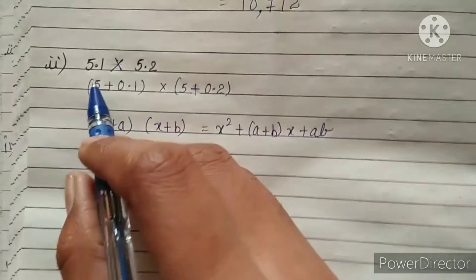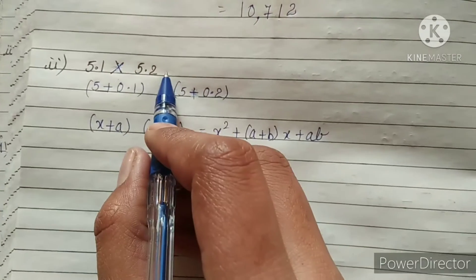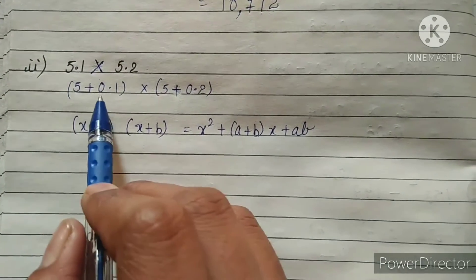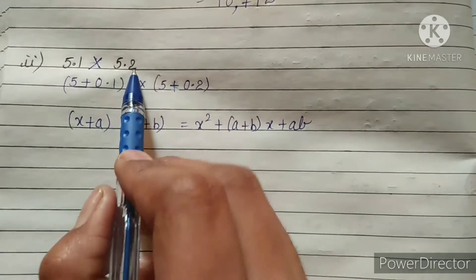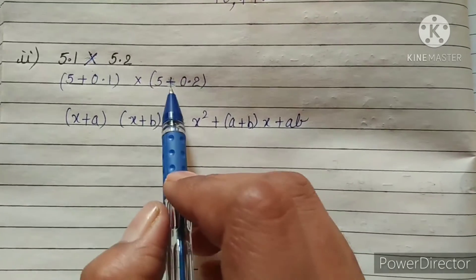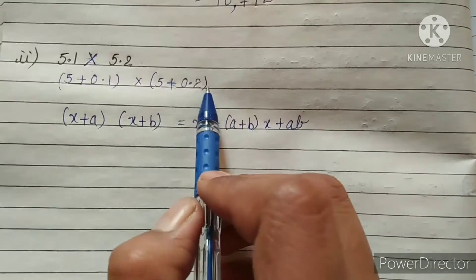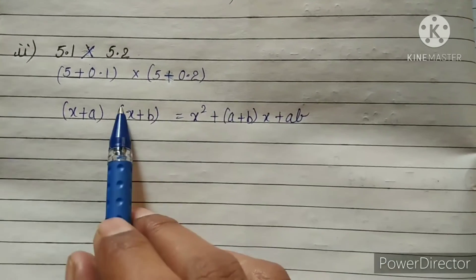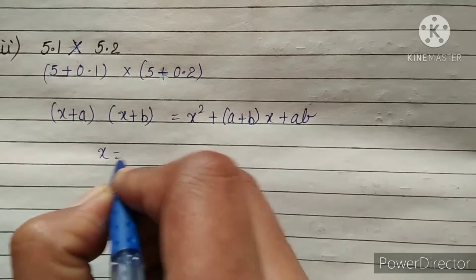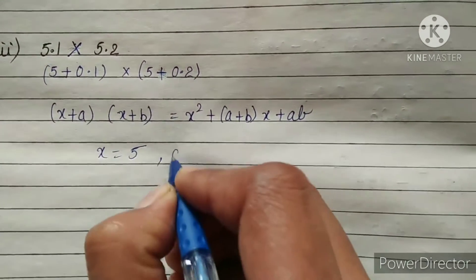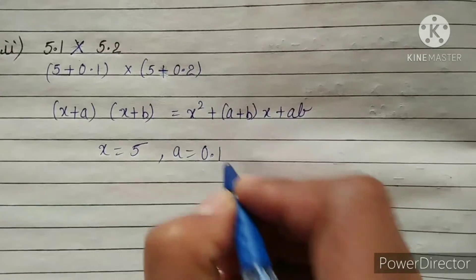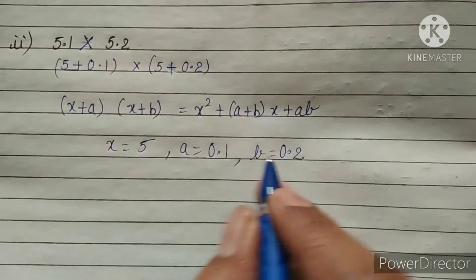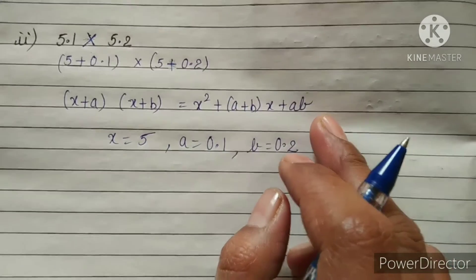Part 2 is 5.1 multiplied by 5.2. 5.1 can be written as 5 plus 0.1 and 5.2 as 5 plus 0.2. According to the identity, x is 5, a is 0.1, and b is 0.2. These 3 values we will put inside the identity.